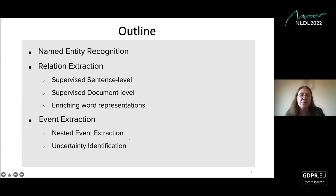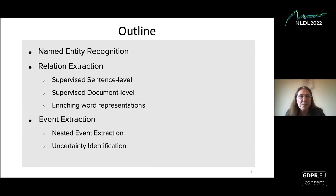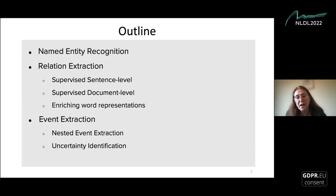To start the outline of my talk, I'll emphasize different steps of information extraction, from named entity recognition to relation extraction. This will include supervised sentence-based and document-level relation extraction, but also ways to enrich word representations by injecting syntactic information. I'll focus on areas relevant for biology and pathway reconstruction, such as event extraction, nested events, and the identification of uncertain events, concluding with an application incorporating uncertainty for ranking events.